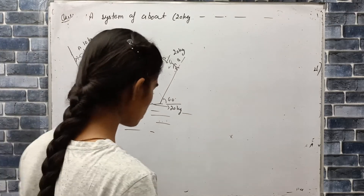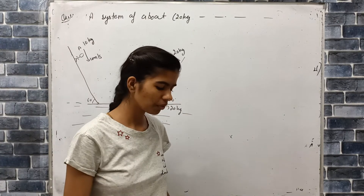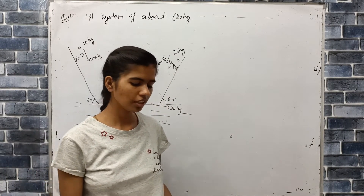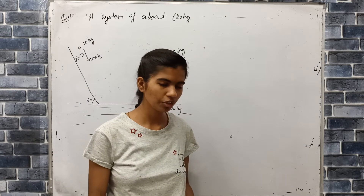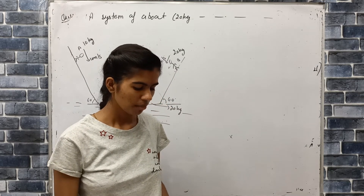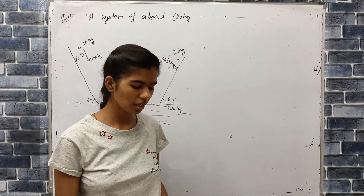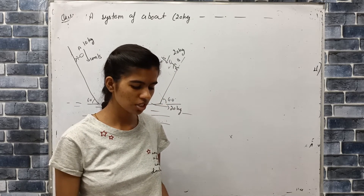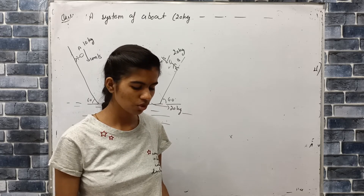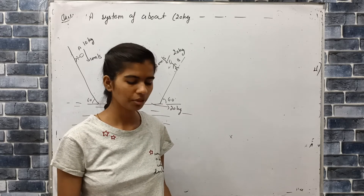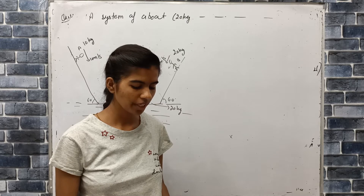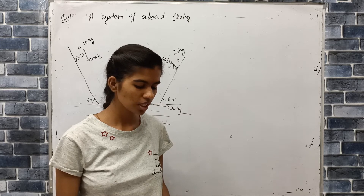The question is: a system of a board of 20 kg, Mr. A of 10 kg, and Mr. B of 20 kg are at rest initially. Mr. A starts running with a constant speed of 10 meters per second and Mr. B with a constant speed of 20 meters per second. They collide at the horizontal part of the board.